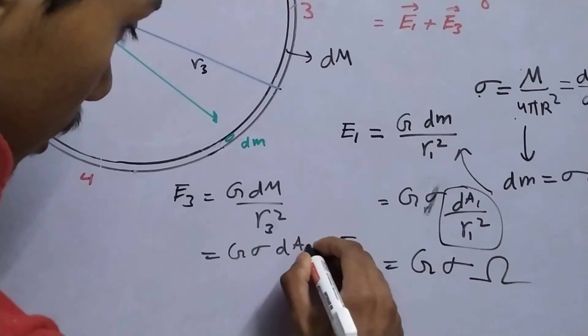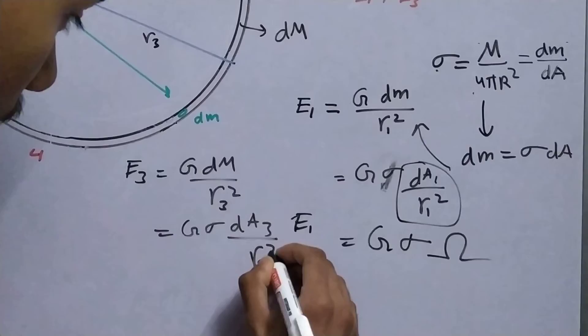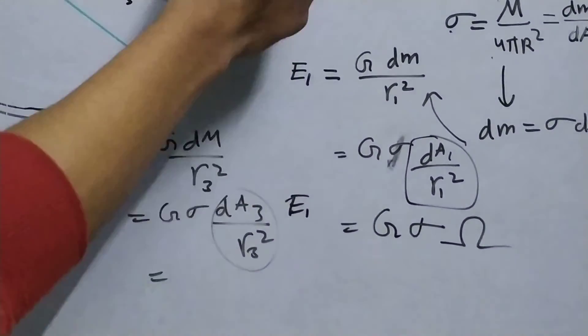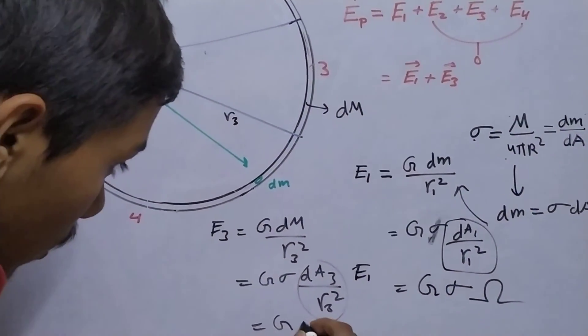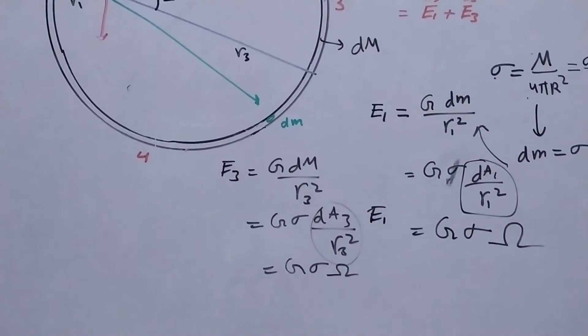Sigma dA3 divided by r3 square and since these two masses subtend the same solid angle at this point, you can also write this as g sigma omega.